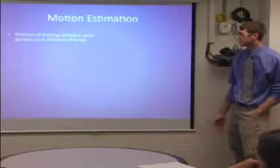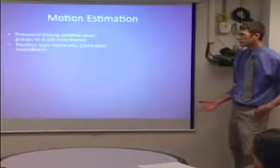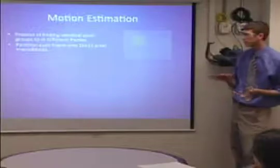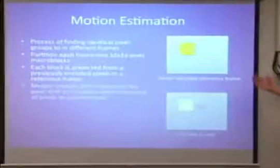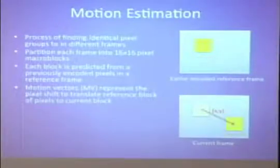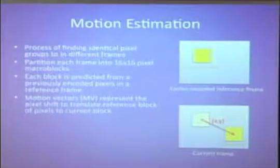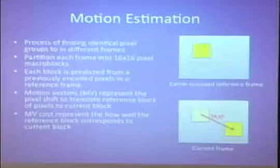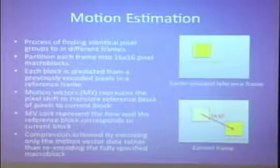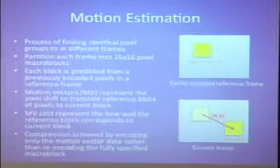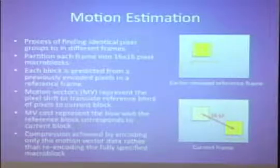The motion estimation process is the process of finding identical pixel groups between different frames in a video. We partition each frame into a 16x16 pixel block. Each block is predicted from previously encoded pixels. We have an earlier encoded frame and a reference block, and the motion vector — simply an x-y coordinate — lets us translate that earlier encoded block to the current block. The cost associated with that vector tells us how good a match it is: a very low cost means a great match, a high cost means it's not well correlated. Compression is achieved by saving these motion vectors instead of re-encoding each block.